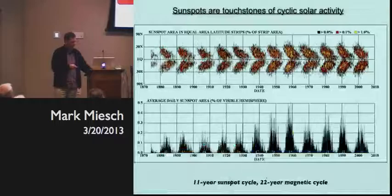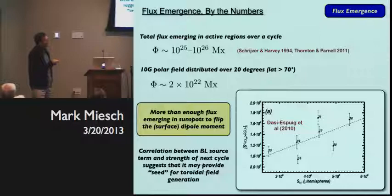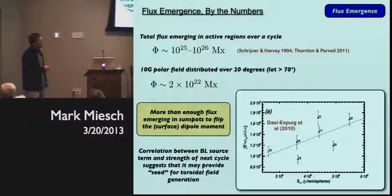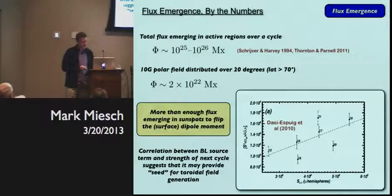The source term for poloidal field at a given cycle should be proportional to the amount of flux present — like the sunspot number — times the mean tilt of the active regions. If that provides the seed for the next cycle, then the strength of the next cycle should be correlated with this Babcock-Leighton source term of the previous cycle. We have good tilt angle data going back about a century, to solar cycle 15 or so, for about nine or ten cycles. It does seem to loosely correlate — observational evidence that the Babcock-Leighton mechanism may be doing something.